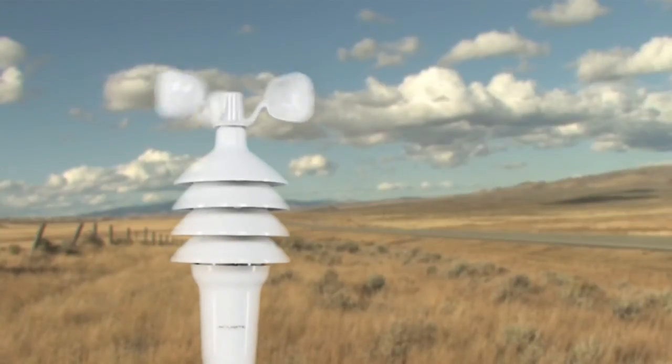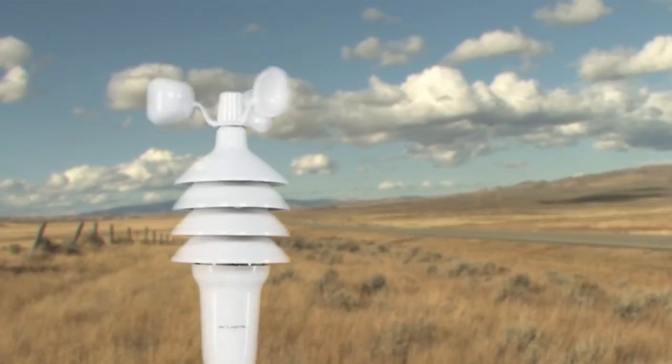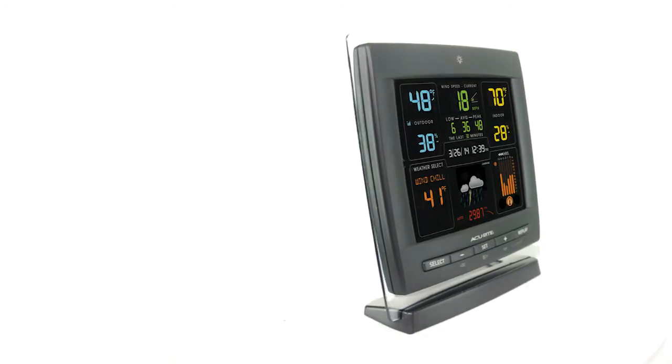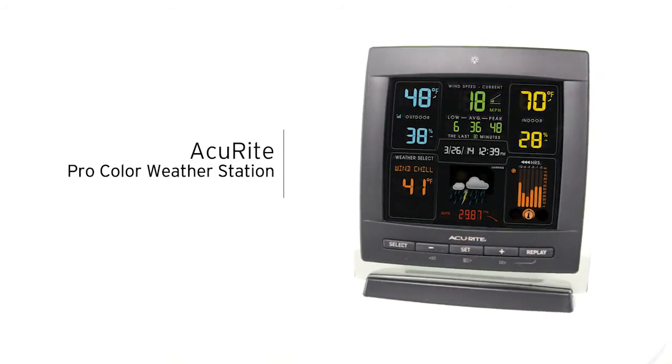The 3-in-1 sensor is easy to set up, includes mounting hardware, and features a two-year battery life for maintenance-free operation. Stay informed of the changing conditions outside your home environment with AcuRite's Pro Color Weather Station.